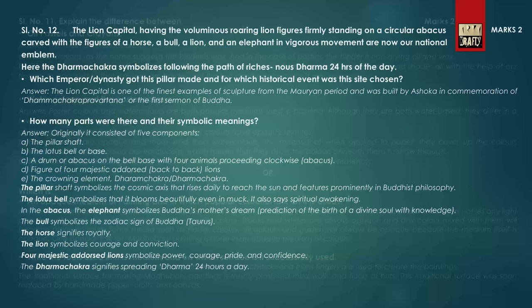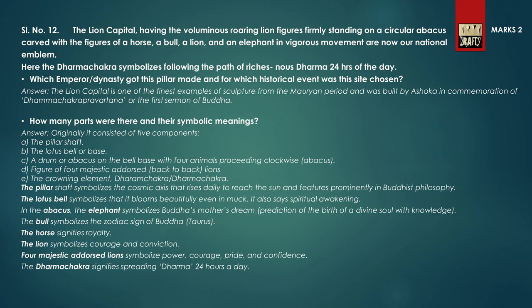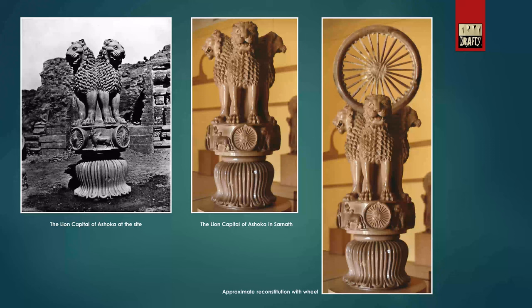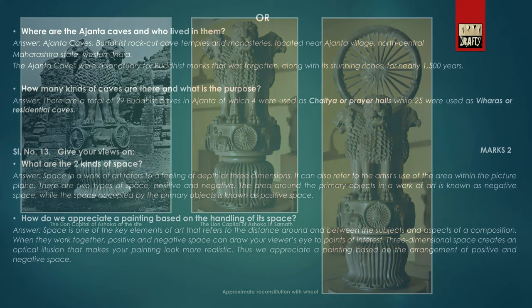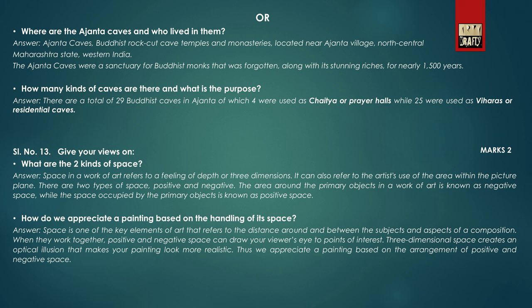In question number 12, you have to explain the Lion Capital of Sarnath, its five parts and their symbolic meanings. These are three pictures of the Lion Capital of Sarnath. There is an alternate question: where are the Ajanta caves and who lived in them? The second part asks: how many kinds of caves are there and what is their purpose?